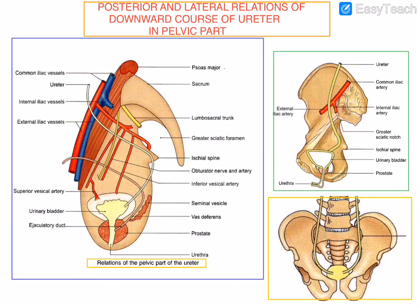On the posterior aspect of the ureters we will find the internal iliac artery, and then the commencement of the anterior trunk of the internal iliac artery. Then we will find the internal iliac vein, the lumbosacral trunk, and finally it is related to the sacroiliac joint — the SI joint — on the posterior aspect. These are the posterior relations of the ureter.